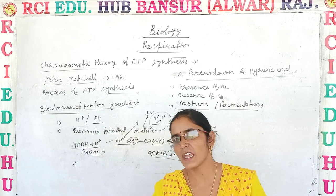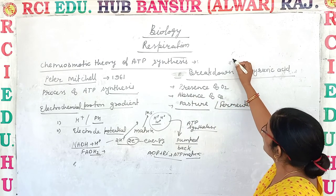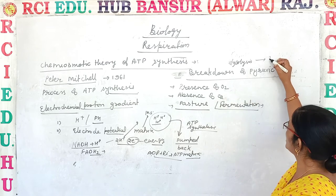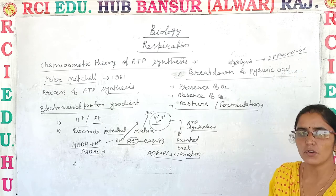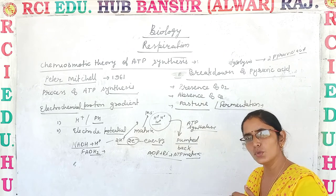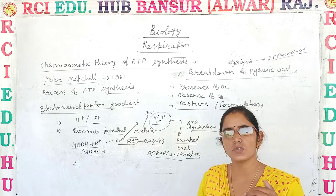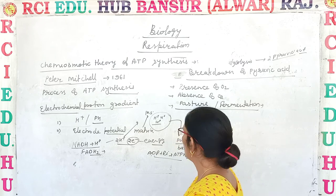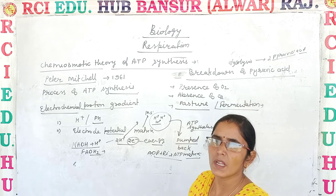Now the next topic is the breakdown of pyruvic acid. During the process of glycolysis, one glucose molecule is oxidized into two molecules of pyruvic acid. Pyruvic acid has two options. One is that in the presence of oxygen it enters the Krebs cycle, producing three molecules of carbon dioxide per pyruvic acid — so two molecules of pyruvic acid give six carbon dioxide, meaning one glucose molecule is completely oxidized into carbon dioxide, water, and energy.